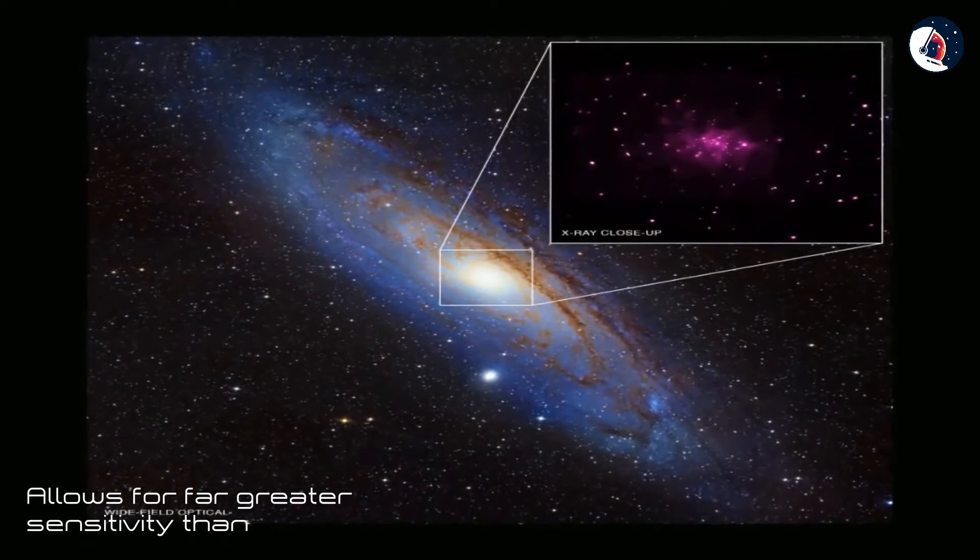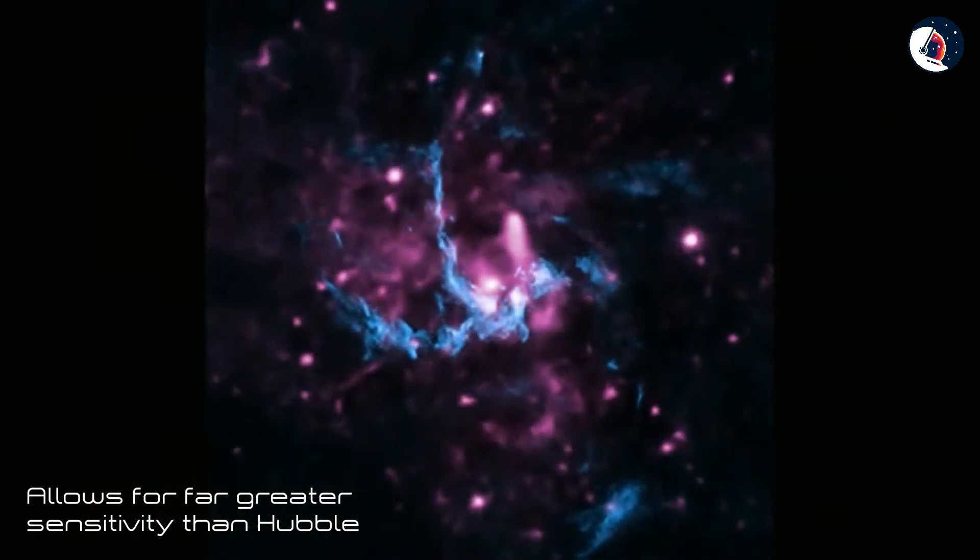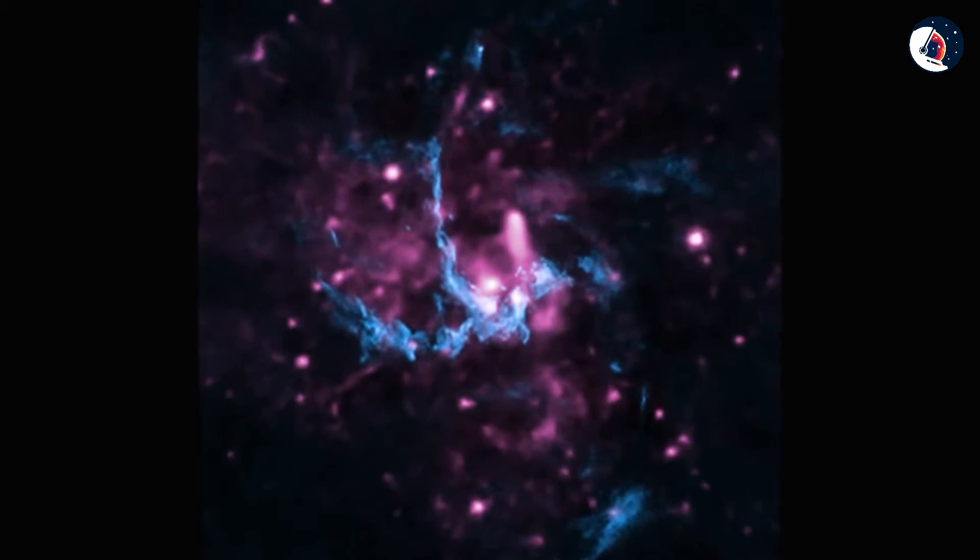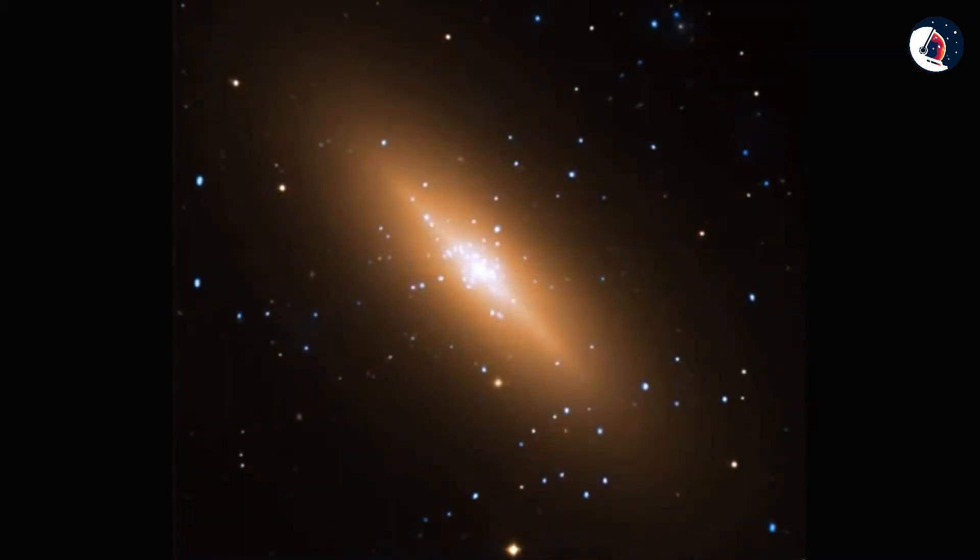Galaxies as massive as our Milky Way or more have what we call a supermassive black hole in the center of the galaxy. Supermassive means that they weigh in at anywhere from a million to ten billion times the mass of our sun.